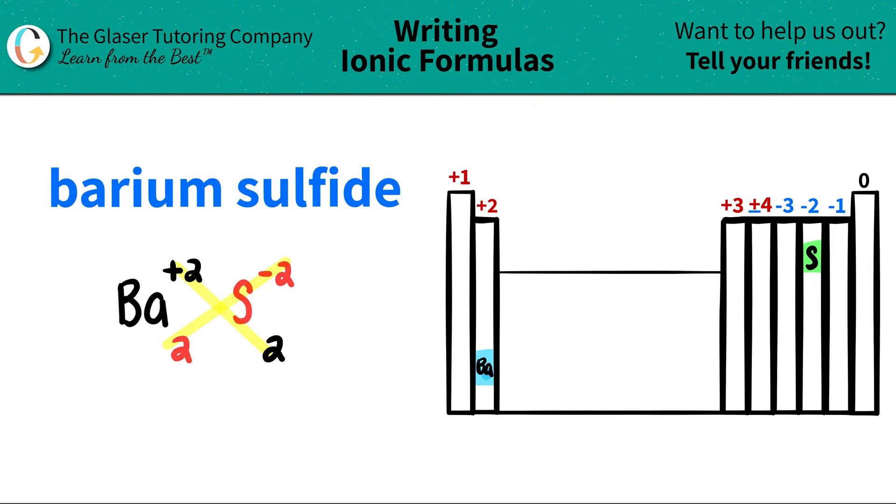But ionic compounds, they always need to be simplified. When you see that you have the same number that's higher than 1, you need to simplify this number by division. If I take both of these and divide them by 2, I will get a smaller number, and 2 divided by 2 is 1. That number, the 1, is the new number of the element.